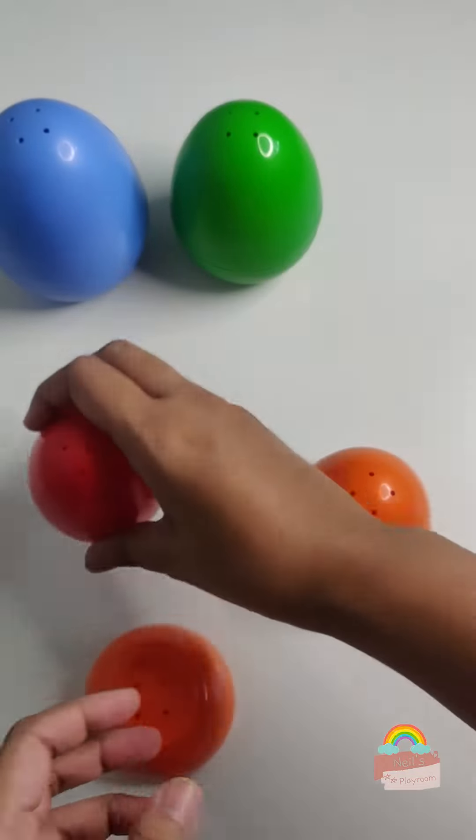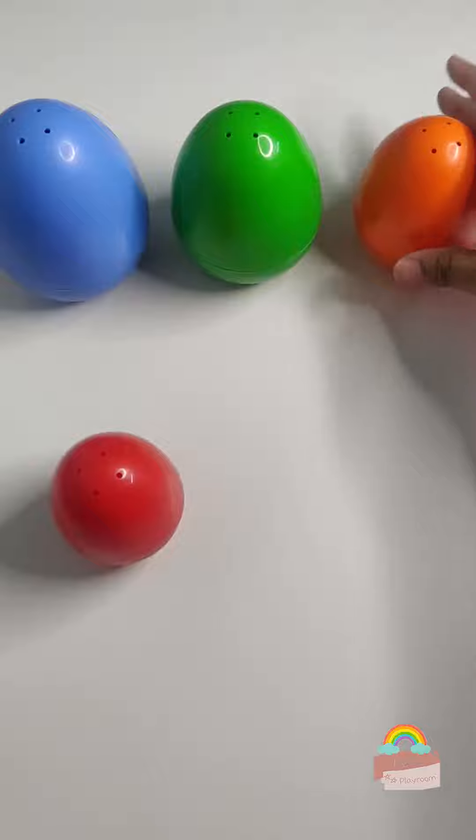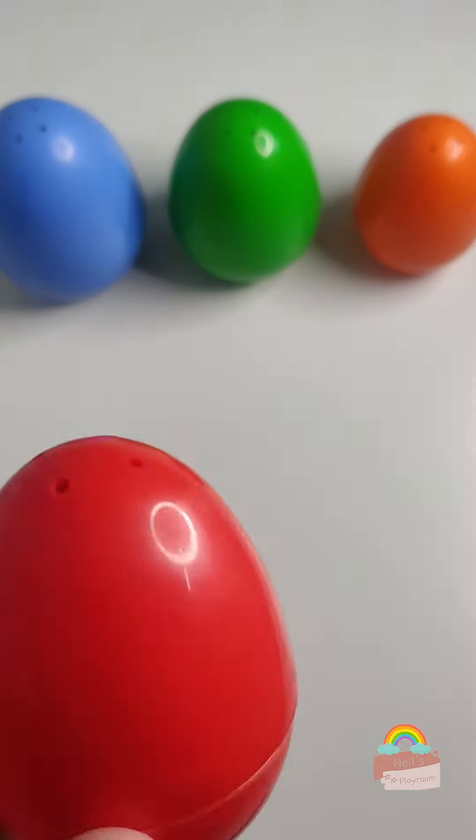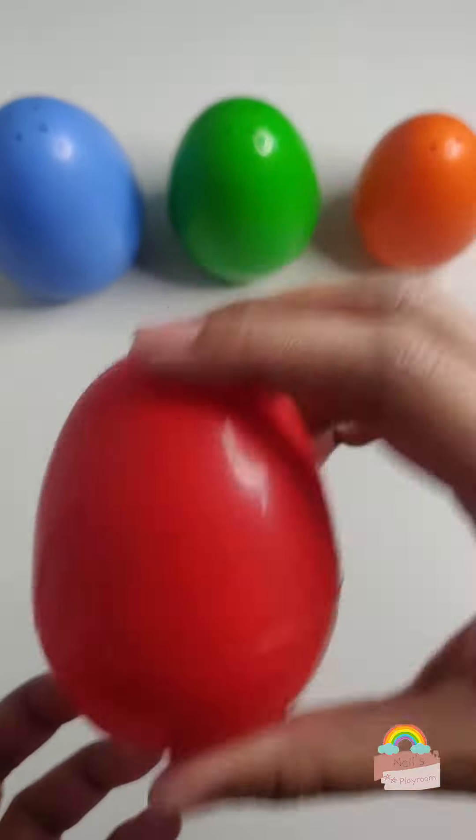We now have four eggs. A blue egg, a green egg, an orange egg and a red egg. What could be inside the red egg? Could it be another egg? Let's find out.